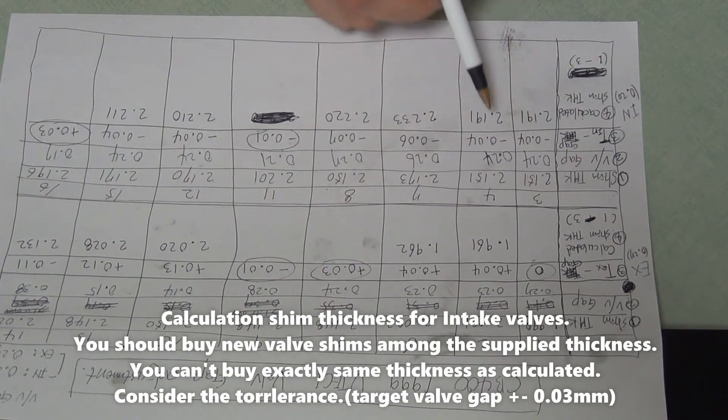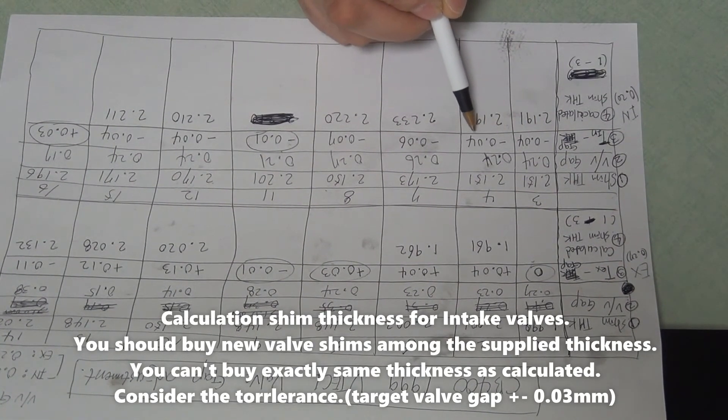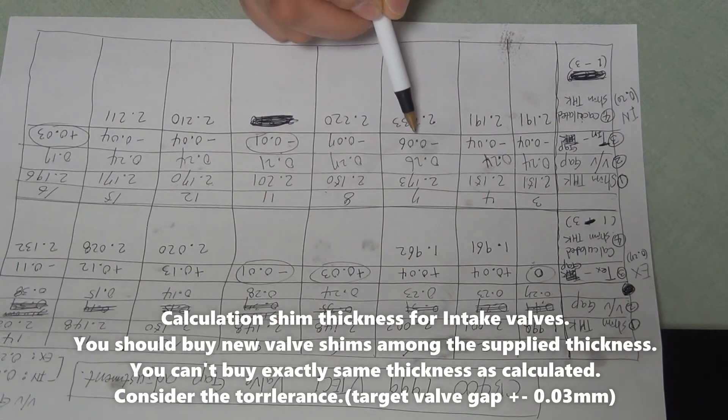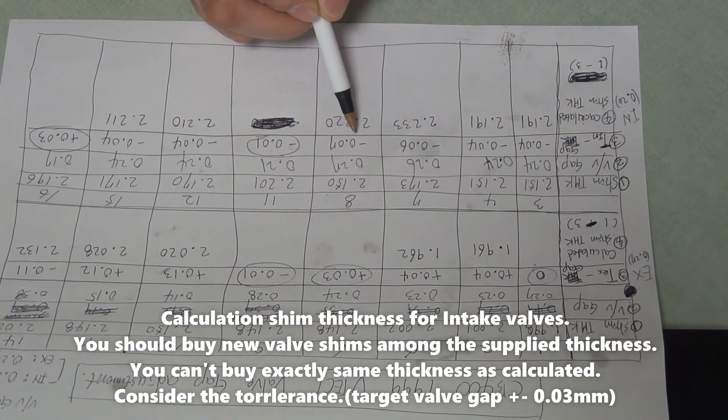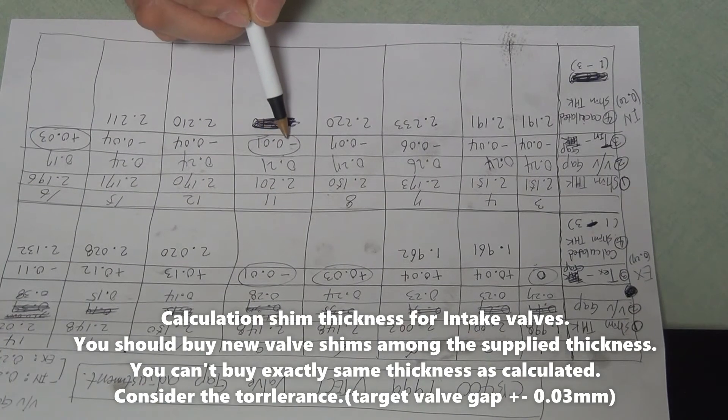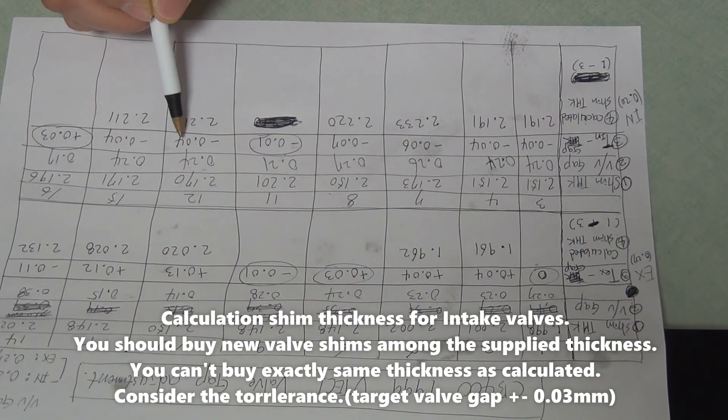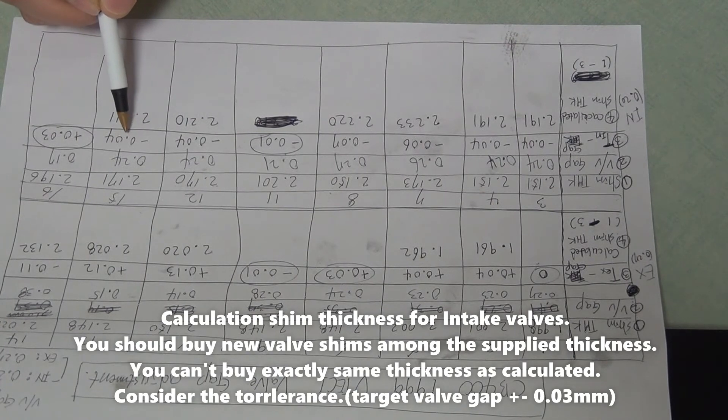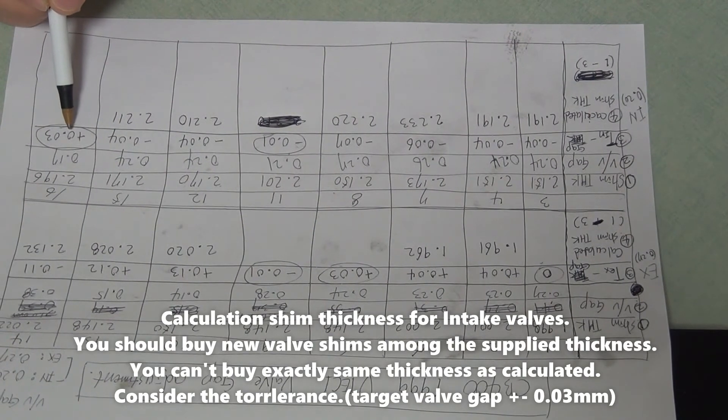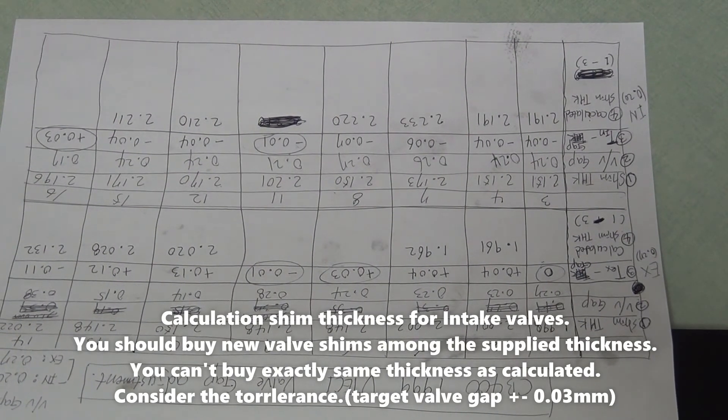Minus 0.04, minus 0.04, minus 0.06, minus 0.07, minus 0.01, minus 0.04, minus 0.04, plus 0.03.